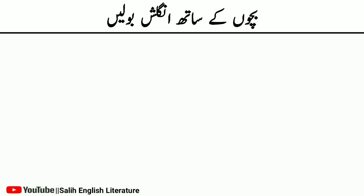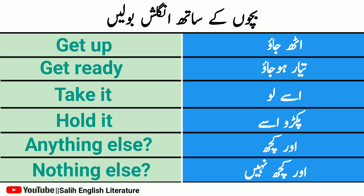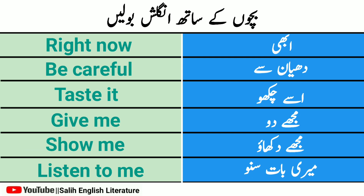Batcho'n ke saath English bolne ke liye chand fiqrat. First: uut jau — get up. Tiyar ho jau — get ready. Ushe lo — take it. Pakdo use — hold it. Aur kuch — anything else. Aur kuch nahi — nothing else. Abhi — right now. Dhyan se — be careful.